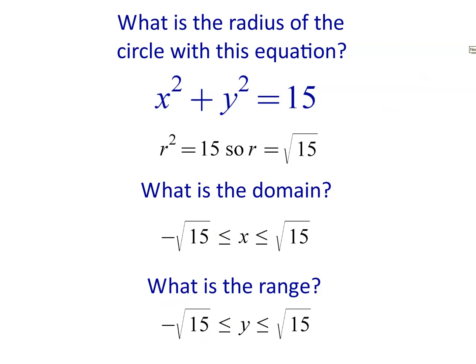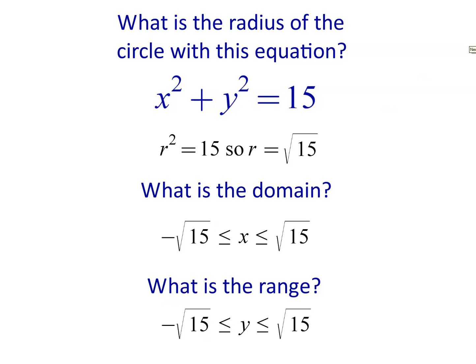Okay, I think we're just about done with the first video. This is just a quick introduction to circles. Okay, determine the position of the following points in relation to the circle, x squared plus y squared equals 16. And by the position, what they're actually meaning is, is that point inside the circle, on the circle, or outside the circle? So I suggest you stop the video and see if you can work out a way of figuring that out. We haven't done it yet, but it's not all that challenging to figure out, so have a go, please.